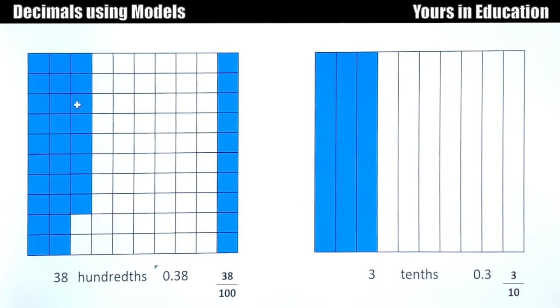28 hundredths. On the left side we have the same 28 that we had before, and I added 10. Even though they're not together, if you add 28 plus 10 that would be 38 hundredths, 0.38, 38 out of 100. And on the right side we only have enough for 3 tenths, 0.3, 3 out of 10 as a fraction.